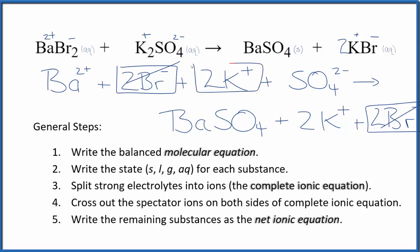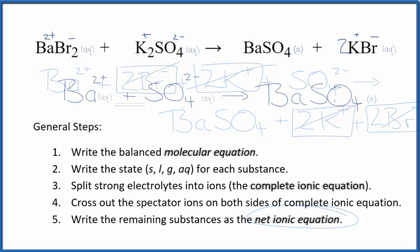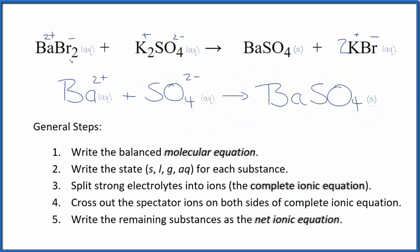Reactants, two potassium ions. Products, two potassium ions. Spectator ions. Cross them out. What's left, that's the net ionic equation for BaBr2 plus K2SO4. I'll clean this up and write the states. We'll have our net ionic equation. So this is the balanced net ionic equation for BaBr2 plus K2SO4.